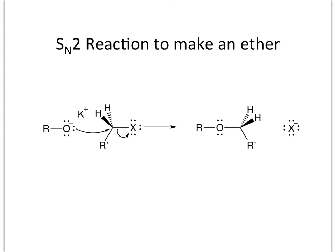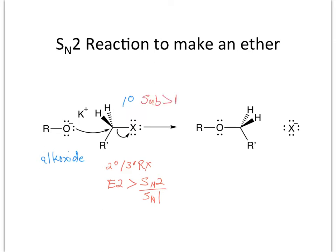The Williamson synthesis is an SN2 reaction to make an ether. We will use an alkoxide as the nucleophile, and note the two hydrogens here. We have to use a primary alkyl halide as the electrophile so that we can get effective attack on the carbon — it's not restricted sterically. Remember that if we have secondary or tertiary alkyl halides with a strong base like an alkoxide, we get more elimination than substitution. So we have to use a primary alkyl halide so that we get substitution more than elimination.